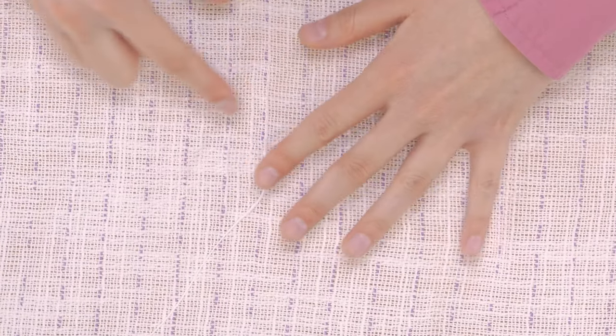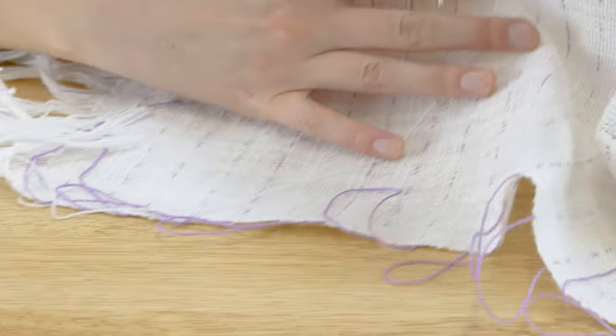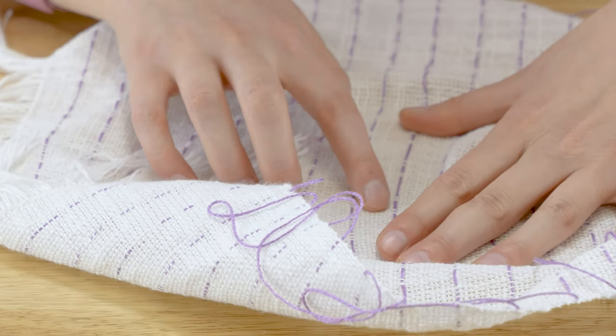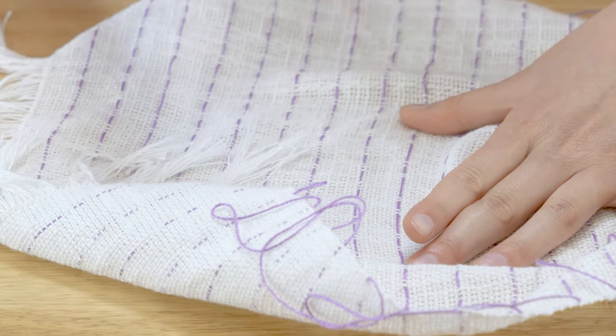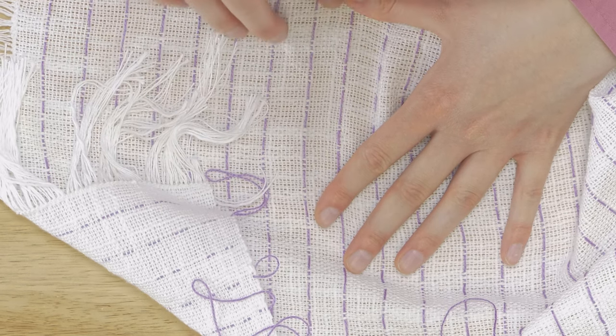So that looks pretty good to me, so I'll flip it over and make sure that it also looks clean on the other side. So I keep my hand in that spot, flip it over so I know where it is on the other side, and take a close look there too. It looks fairly clean there too.